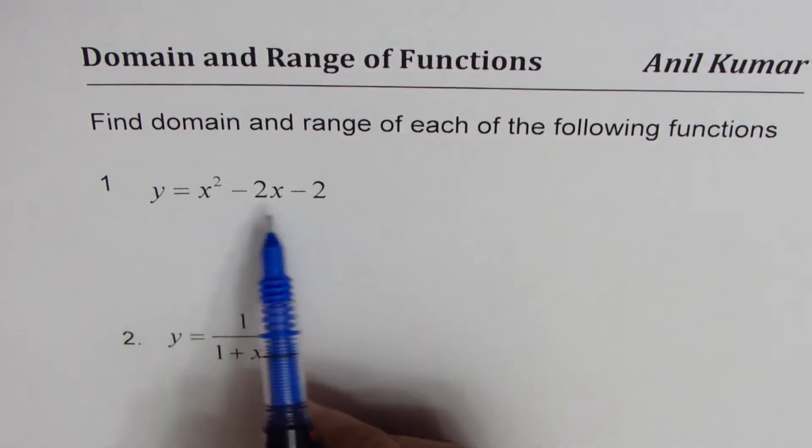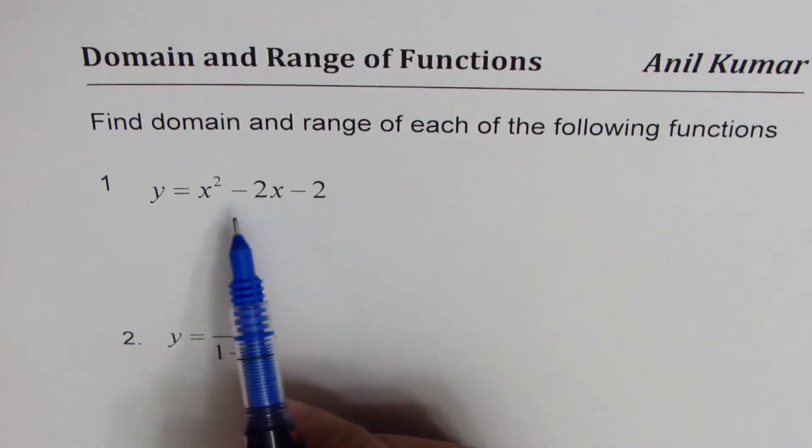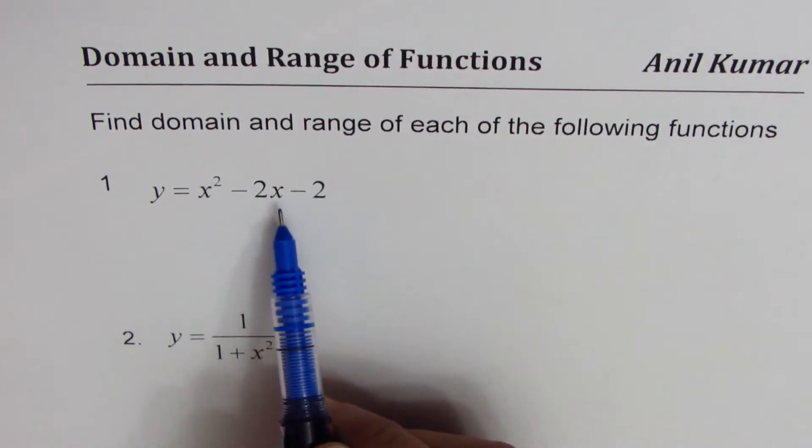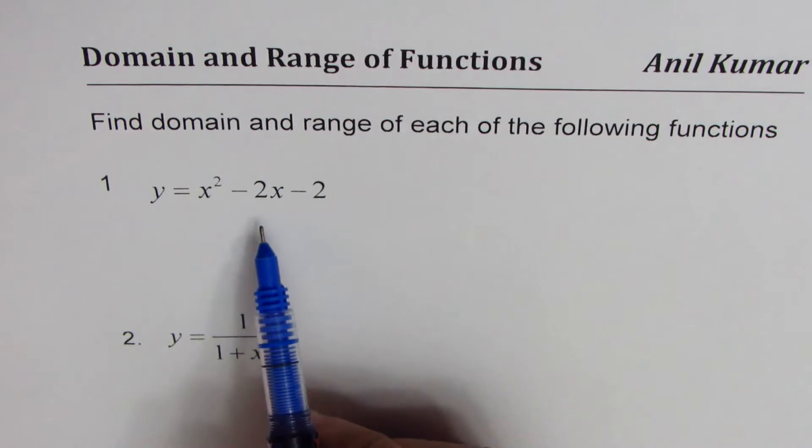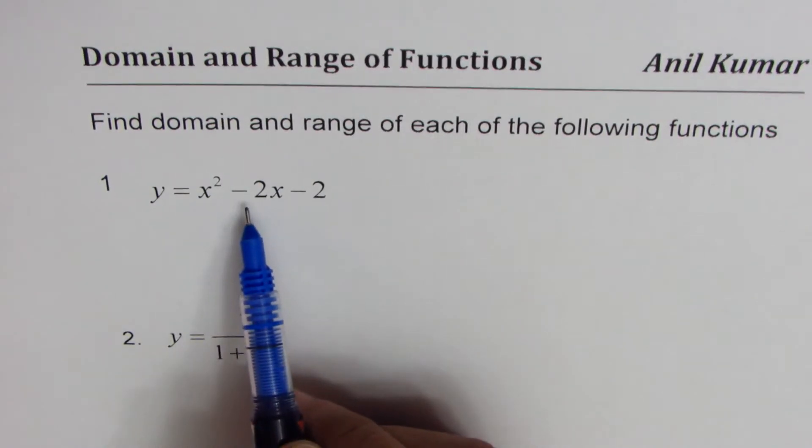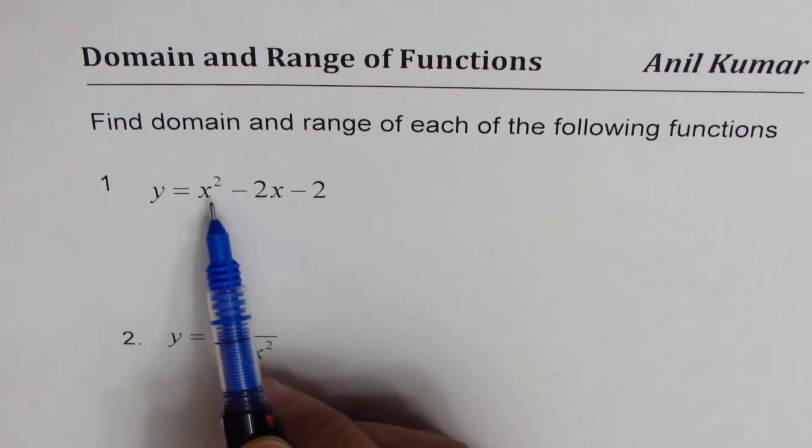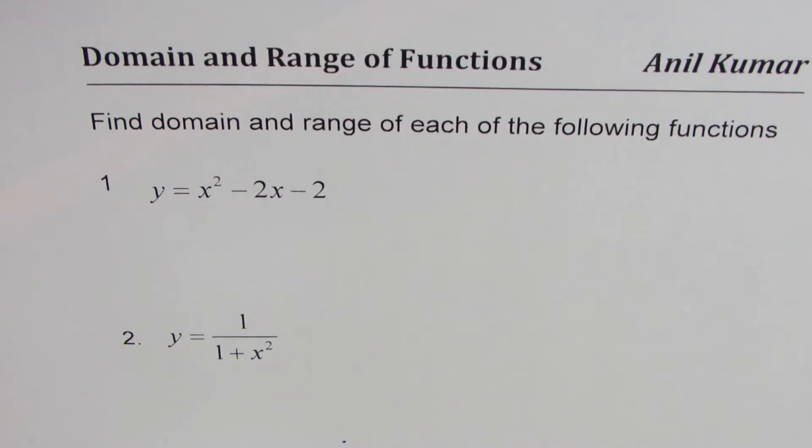First one is a parabola. Domain has no restrictions. It's a continuous polynomial function, right? How do we find range? That is important. It's a parabola which opens upwards.